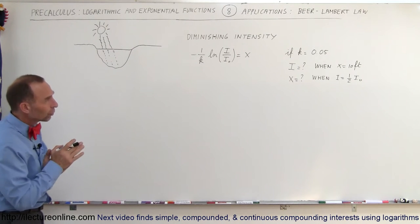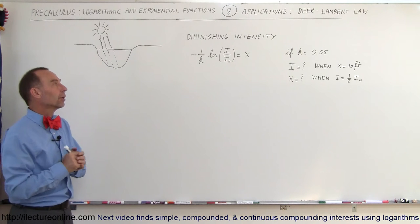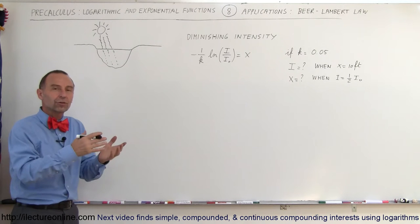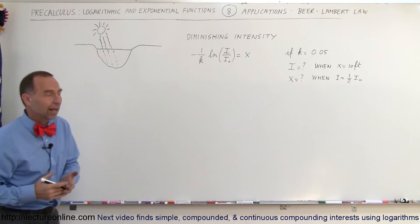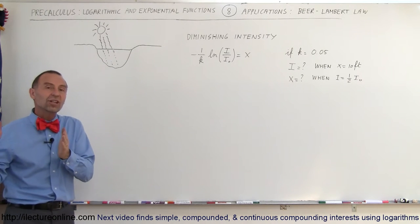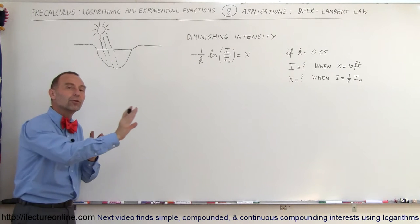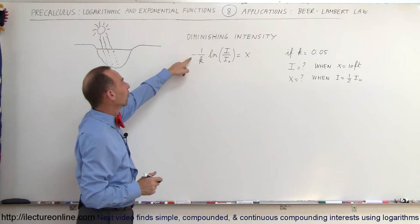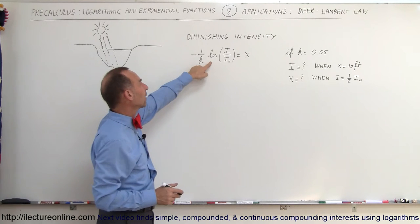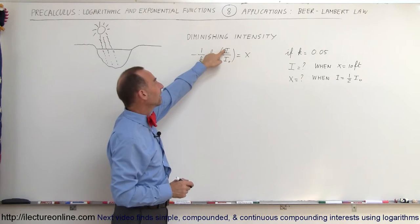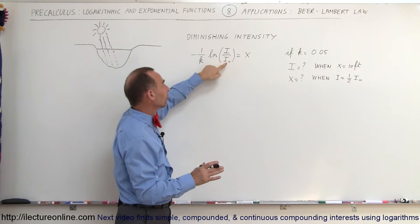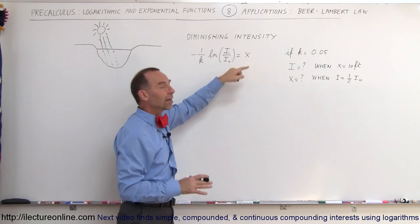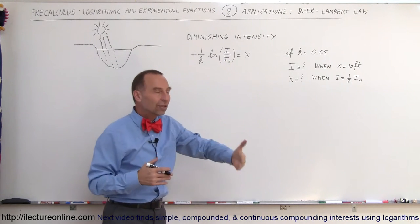The first application we're going to look at is called the Beer-Lambert law. The Beer-Lambert law says that if light goes through a material like water, glass, or plexiglass, it will diminish in intensity as it goes further into the material. The equation is x = -(1/k) × ln(I/I₀), where x is the distance into the material and I₀ is the original intensity as light enters.